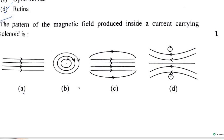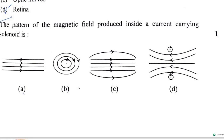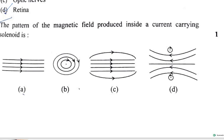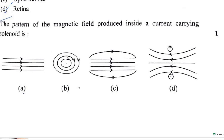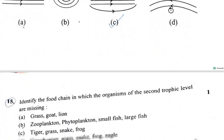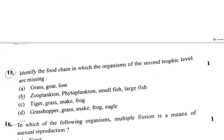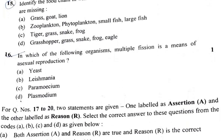Question 14: The pattern of the magnetic field produced inside a current-carrying solenoid — the center is straight and the curve goes outward. So option C is correct.